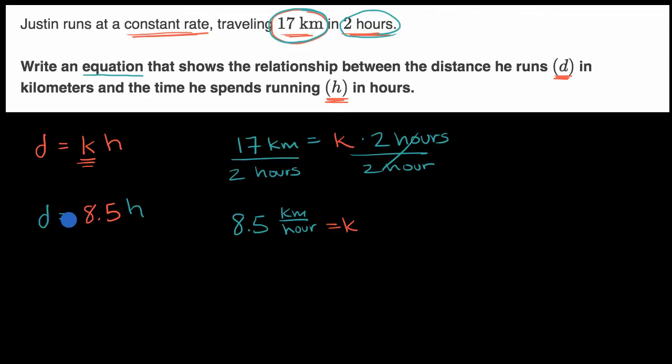If we wanted to write their units, we could write d is equal to 8.5 kilometers per hour times h, which is given in hours.